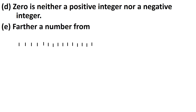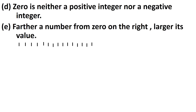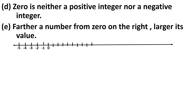Further a number from 0 on the right, larger its value. A number further from 0 to the right, its value is greater. See the number line: minus 5, minus 4, minus 3, minus 2, minus 1, 0, 1, 2, 3, 4, 5, 6, 7, 8, 9 and so on. On the right hand side of 0 we have 1, 2, 3, 4, 5, 6. The farther we go from 0, the greater the value. For example, 2 is greater than 1, and 7 is greater than 3 because 7 is farther away from 0.